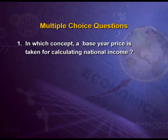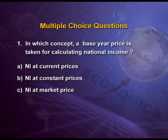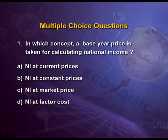First question: in which concept is a base year price taken for calculating national income? Options are: national income at current prices, national income at constant prices, national income at market price, and national income at factor cost. The answer is national income at constant prices, because we take the base year price in national income at constant prices.